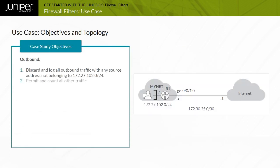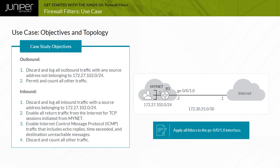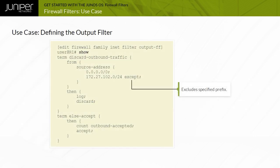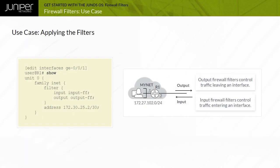The objectives and topology for a firewall filter use case are outbound and inbound, with all filters applied to the GE0-0-1.0 interface. The sample output filter used to meet part of the objectives is displayed. The sample input filter used to meet the rest of the objectives is also displayed. This example shows the application of the firewall filters.